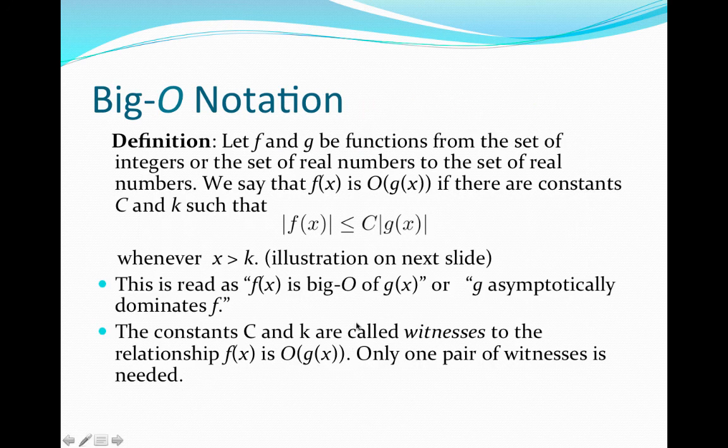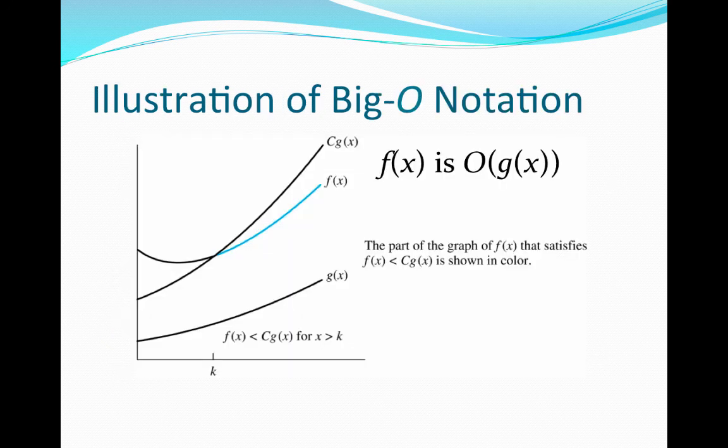And as I mentioned before, this is read as f of x is big O of g of x. However, we could also say that g asymptotically dominates f. So why would we phrase it in this way? Well, we can think of drawing a vertical asymptote at k, so drawing a straight line at the value x equal to k. And then from that point on, we know that there's this constant c so that the constant multiple c times g of x is bigger than or equal to the function f of x for every x beyond this asymptote. So that means that g asymptotically dominates f.